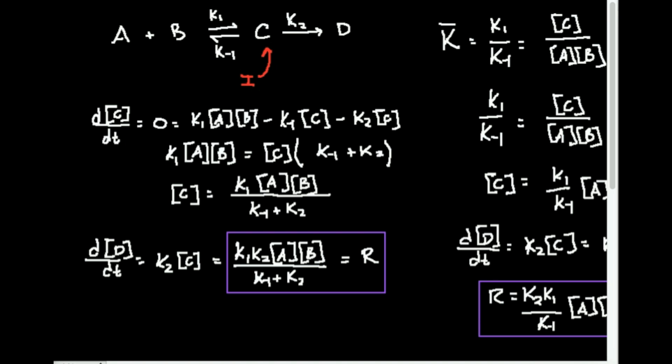The first one we're going to do is the steady-state approximation. We're going to find that depending on which technique you use to get a rate expression, the actual expression can vary a little bit. So both of these methods don't necessarily give you the same answer. In this video we're going to do the steady-state approximation.